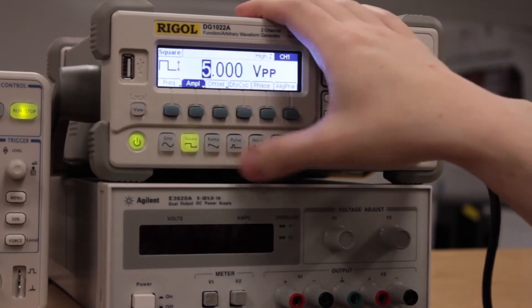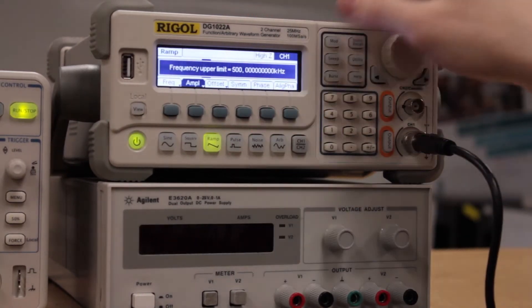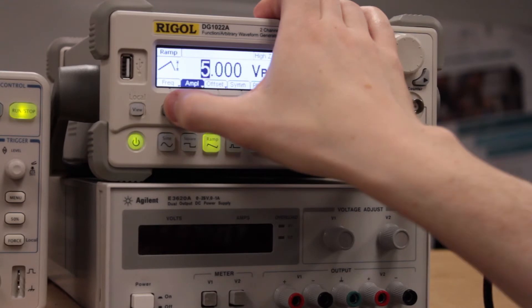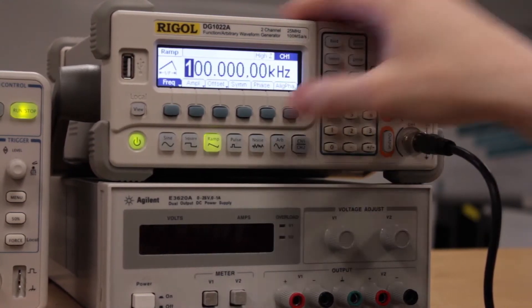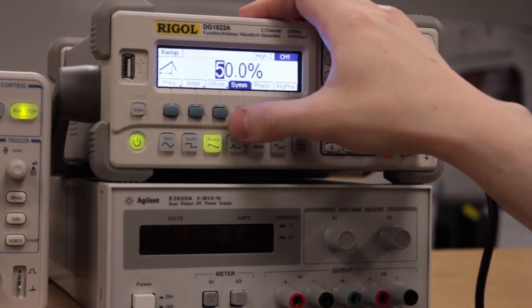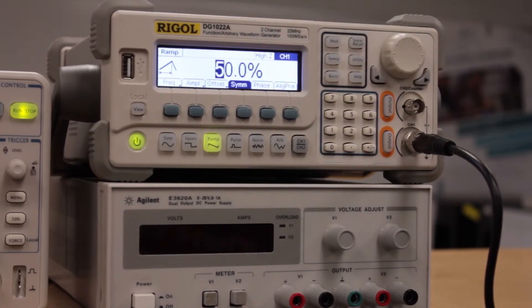If we go to ramp, we can actually do symmetry, and this is a neat one because it actually changes the slope of the ramp. We can make one side of the ramp steeper than the other side.